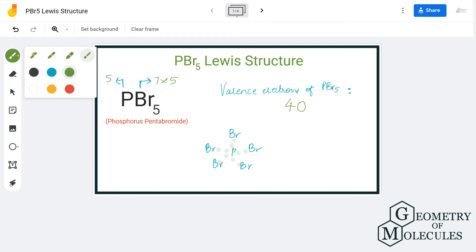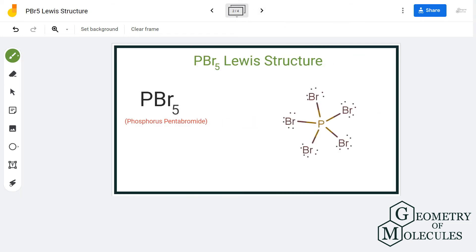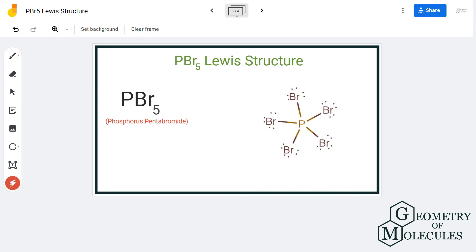Now you can place all the other valence electrons around bromine atoms and check if the octets of all atoms are complete. Phosphorus is sharing all of its five valence electrons with five bromine atoms, and bromine has eight valence electrons.